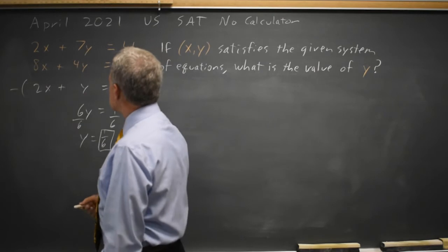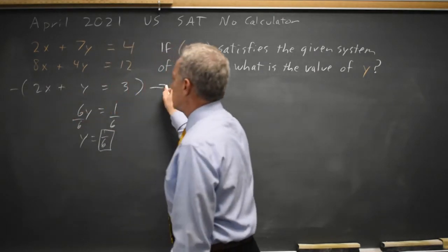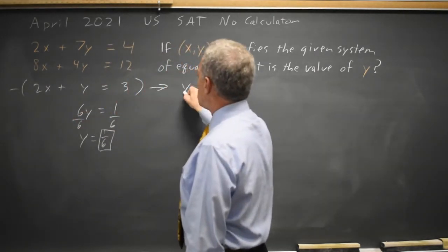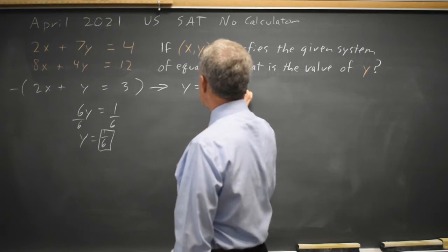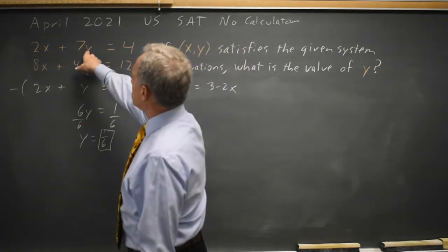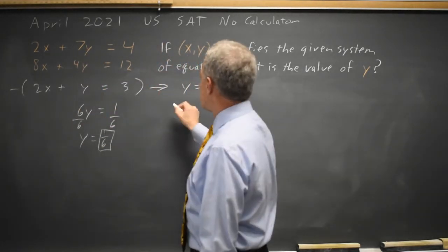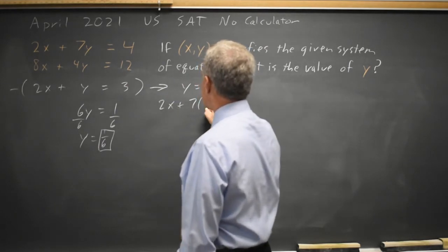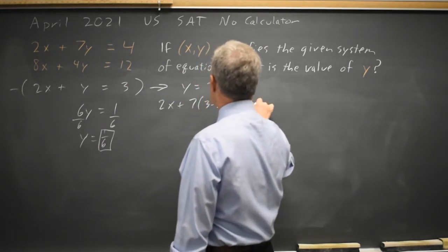Alternatively, I can solve this equation for y. y equals 3 minus 2x. Substitute that in for y in the first equation. 2x plus 7 times (3 minus 2x) equals 4.